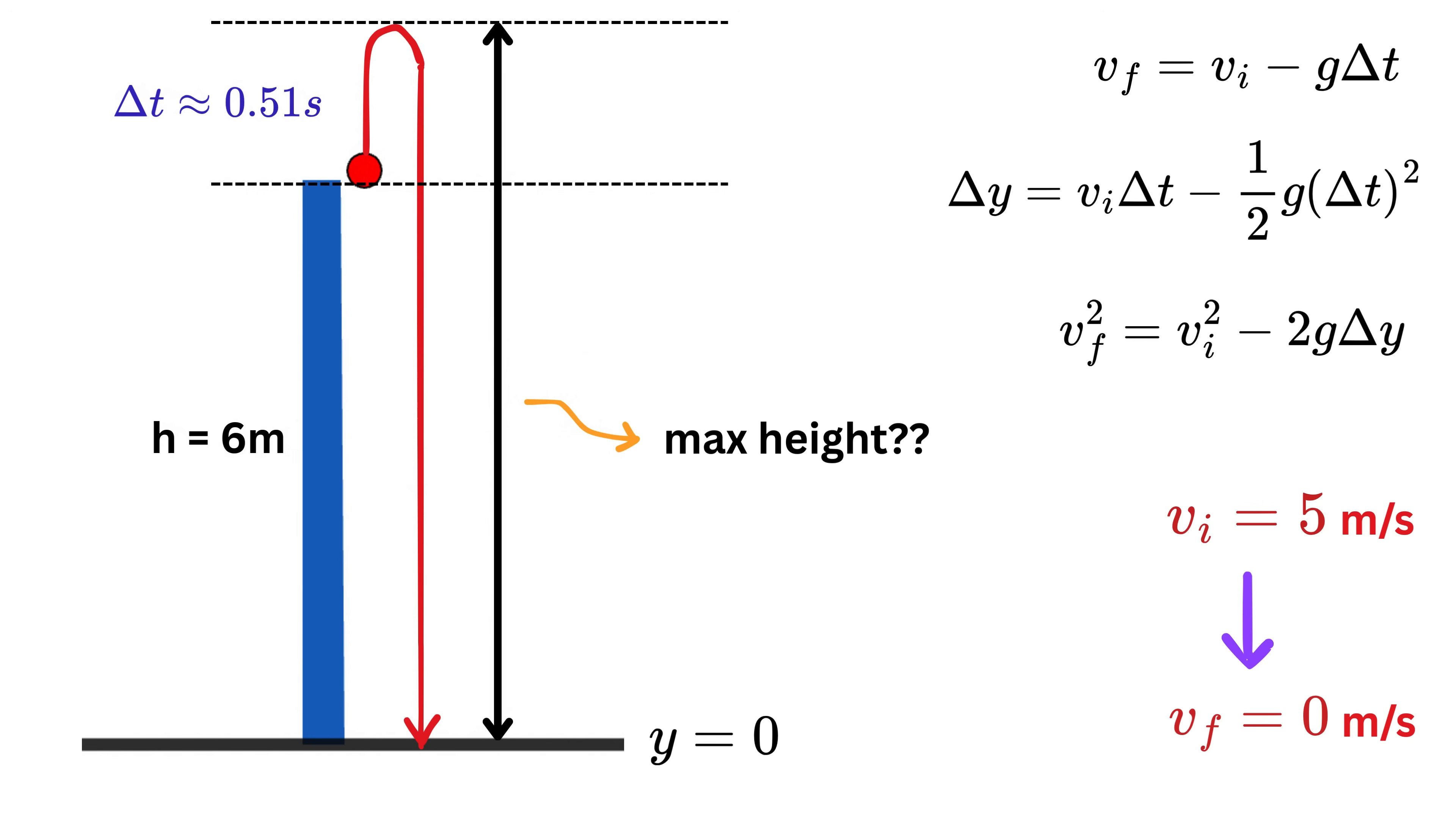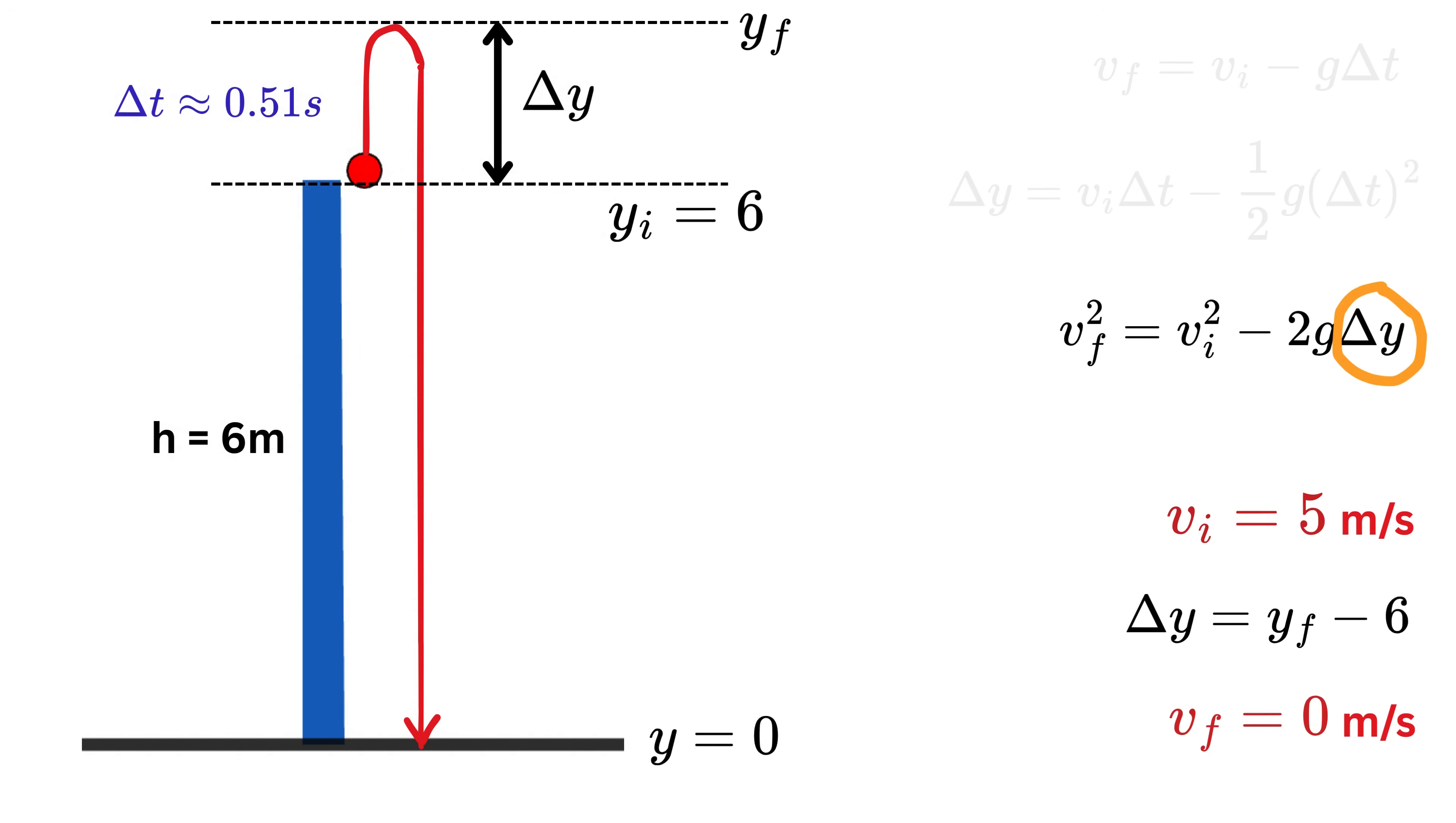The second question is to find this peak or the maximum height from the ground. We have the initial position y_i as 6. Let us label this max height as y_f or the final position of the ball as soon as it reaches the peak height. So, Δy will be y_f minus 6. We can use the third kinematic equation to solve for the Δy. Substitute the known values. We get 0 squared or 0 equals 5 squared or 25 minus 2 times 9.8 times Δy. This gives Δy as around 1.28 meters. So, y_f for the maximum position of the ball is equal to 6 plus 1.28 or 7.28 meters.